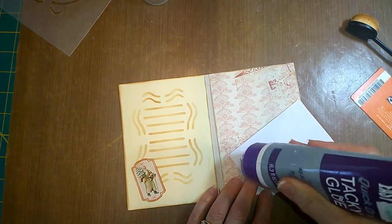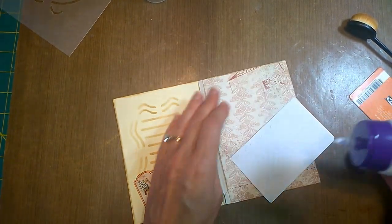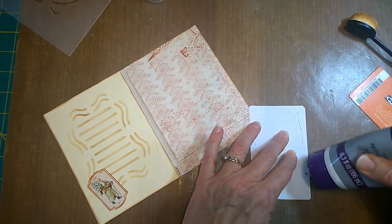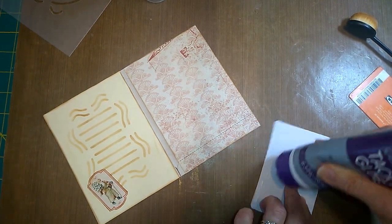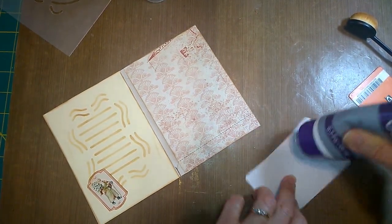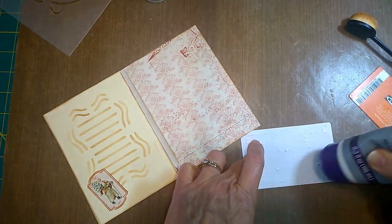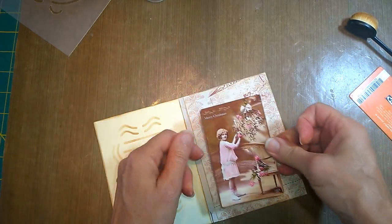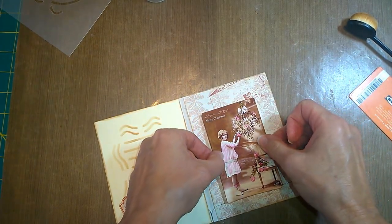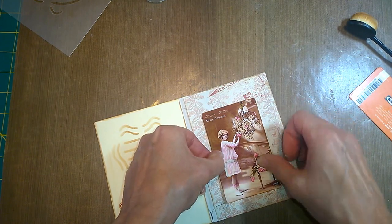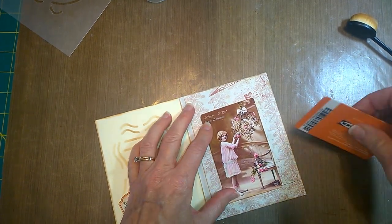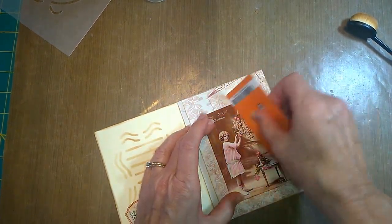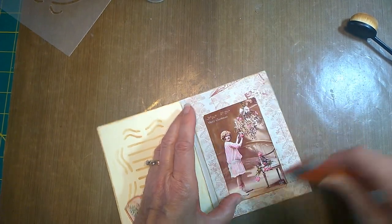So I'm going to put that on here. And then after that, I'm going to be attaching the lace. Let's put her in here. A little off to the side. There we go. She's down there nice.